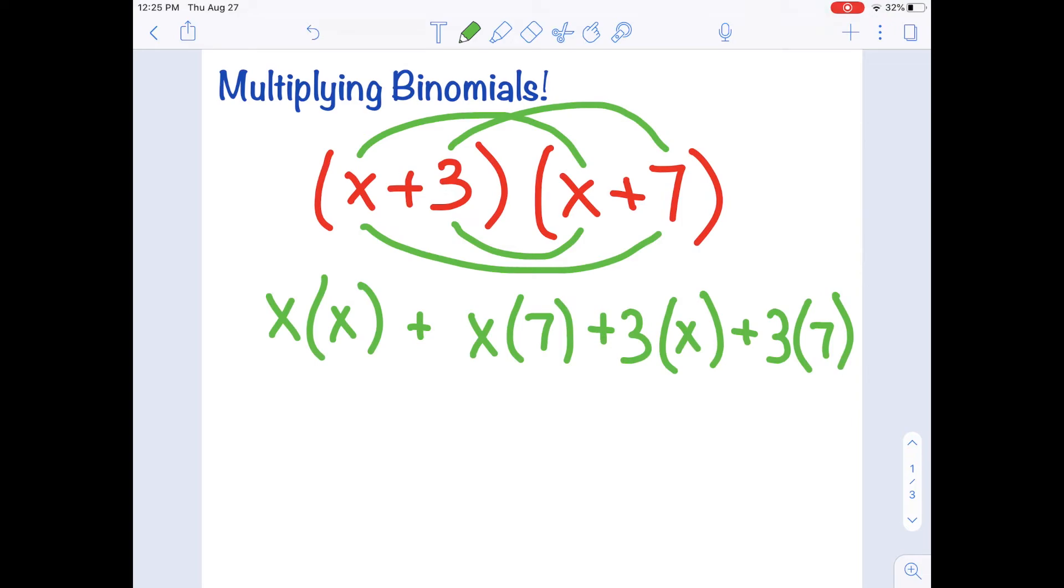So let's go ahead and multiply. x times x is going to give us x squared. x times 7 is going to give us 7x. 3 times x is going to give us 3x. And 3 times 7 is 21.